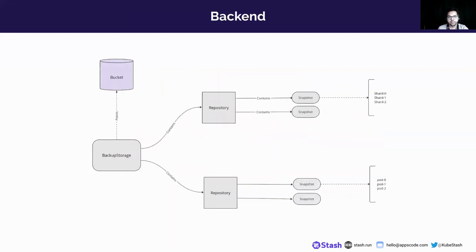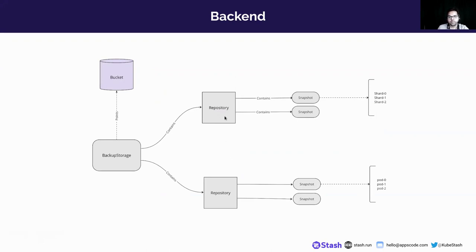This is the simplified view of our KubeStash backend. Backup Storage stores the cloud bucket information — it points to a bucket, and this Backup Storage contains multiple repositories. The repositories contain snapshots, and inside each snapshot is the component backup information, which can be a database component or a workload component.